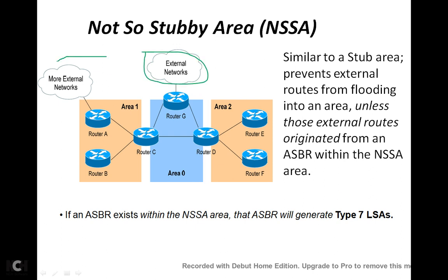The concept is simple. If we have a scenario with two external networks — one here and one here — and three separate areas: area 1, area 0, and area 2, NSSA will prevent flooding of routes from external networks. For example, if any information is coming from this router it will not flood to other areas, unless those routes are generated by an ASBR — Autonomous System Border Router.